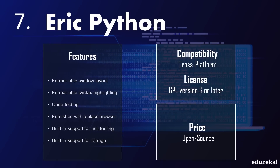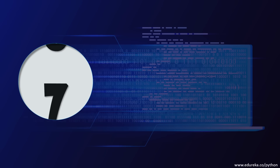At the 7th place is Eric Python. Eric Python is an open source cross-platform IDE written completely in Python. Its source code is freely available and can be studied and recreated by anyone. Key features include a formattable window layout, formattable syntax highlighting, code folding which allows selectively showing or hiding parts of your code, a class browser, and built-in support for unit testing and Django.